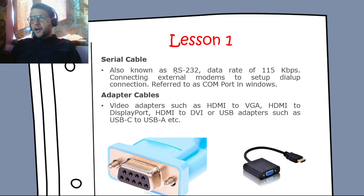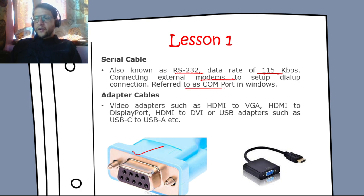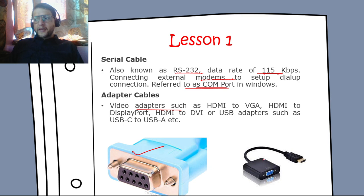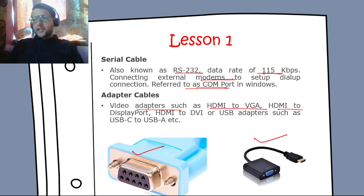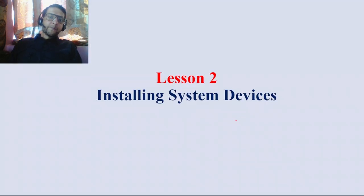The serial cable, also known as RS-232, has a data rate of 115 Kbps and is used to connect external modems for dial-up connections. It is referred to as a COM port in Windows. Adapter cables such as HDMI-to-VGA, HDMI-to-DisplayPort, HDMI-to-DVI, and USB-C-to-A are used when a direct port is not available.